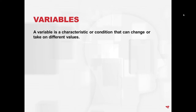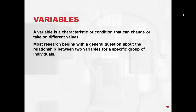So what is a variable? A variable is a characteristic or condition that can change or take on different values. Most research begins with a general question about the relationship between two variables for a specific group of individuals.